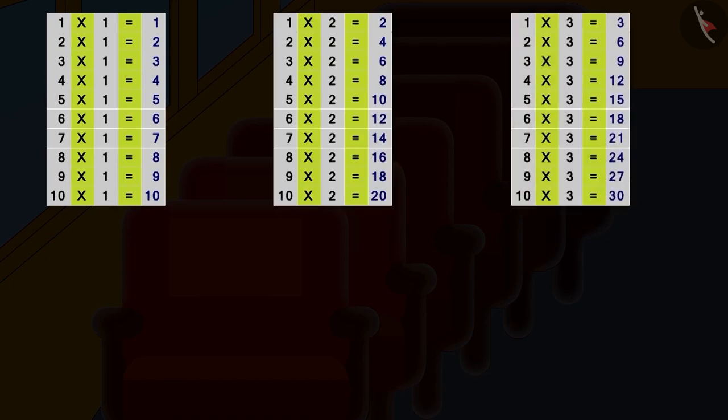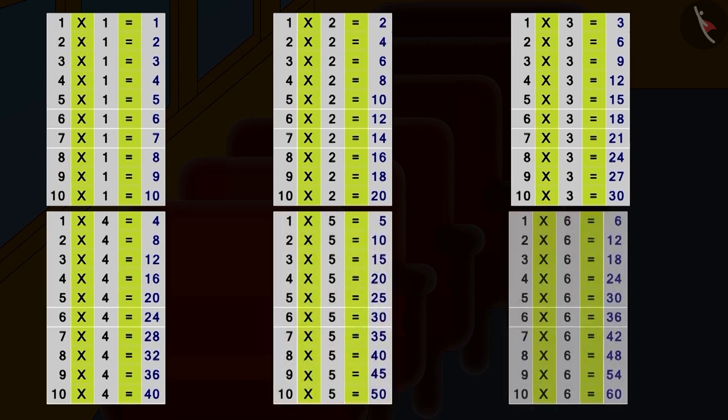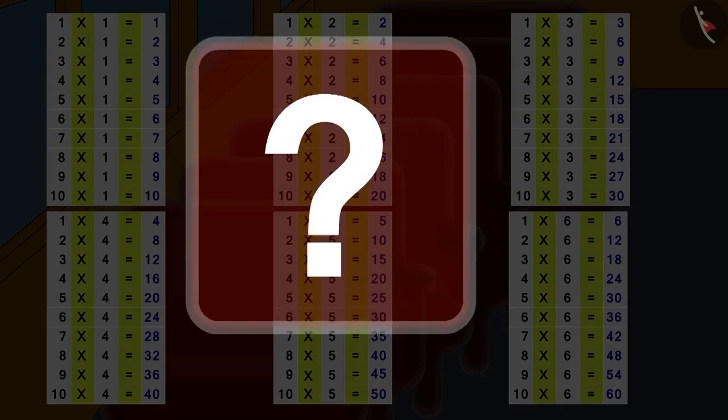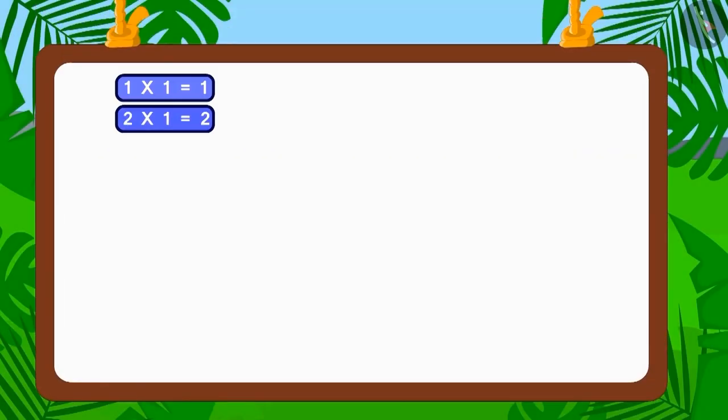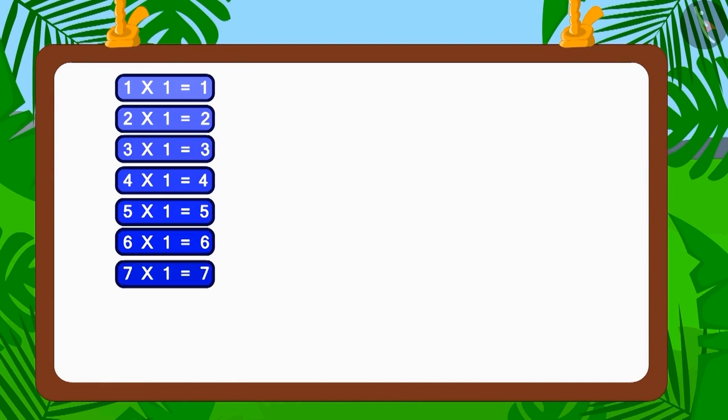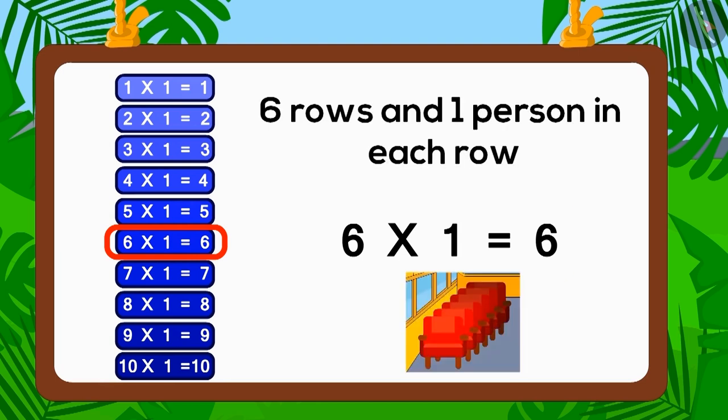Do you want to learn an easy method to find factors? It is very simple. We need to identify the number tables in which the number 6 appears. Come, let's start with the table of 1. Does number 6 appear in the table of 1? Yes, 6 times 1 is 6. Therefore, 6 people can sit in this bus in 6 rows with one person sitting in each row.